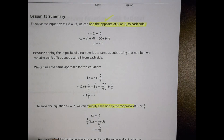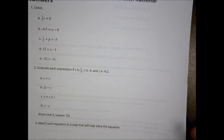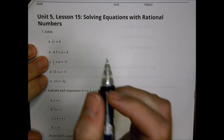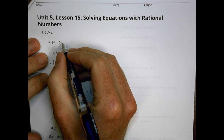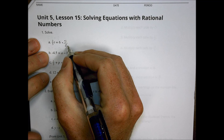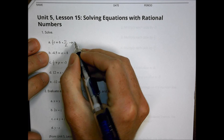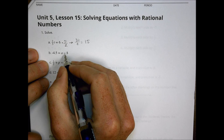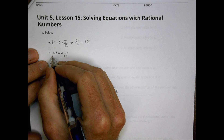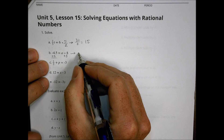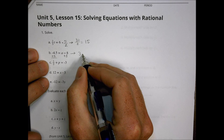Let's take a look at tonight's homework. Starting with A, we're going to multiply by the reciprocal — multiply by five over two. We end up with 30 over two, which is 15. Over here, we're going to add the opposite. Instead of 4.5, we add 8, and negative 4.5 plus 8 is equal to 3.5.